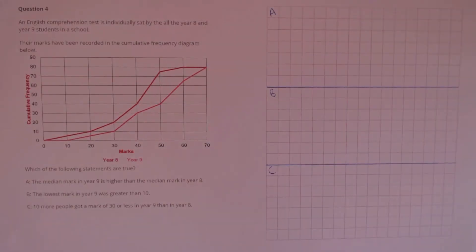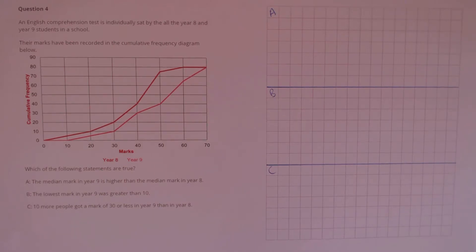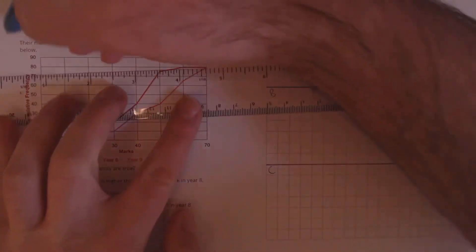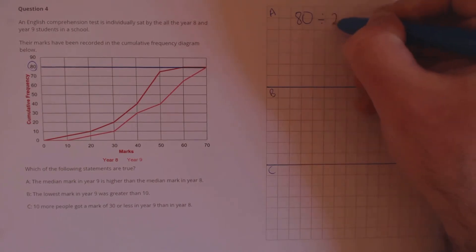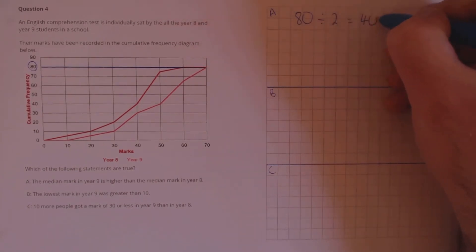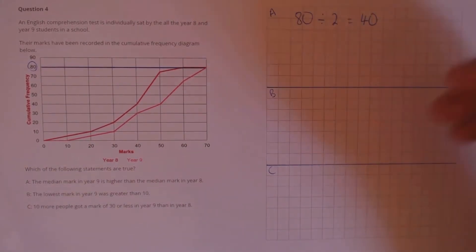Question 4. An English comprehension test is individually sat by all the year 8 and year 9 students in the school. Their marks have been recorded in the cumulative frequency diagram below. Which of the following statements are true? A: the median mark in year 9 is higher than the median mark in year 8. First to calculate the median, we need to know the total number of students — that's the highest point on the graph, so 80. The median is halfway through, so 80 divided by 2 gives us 40 students for the median.